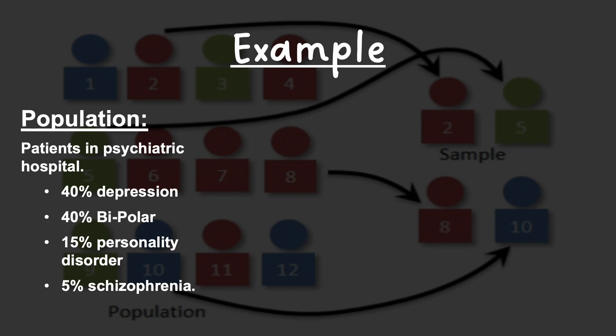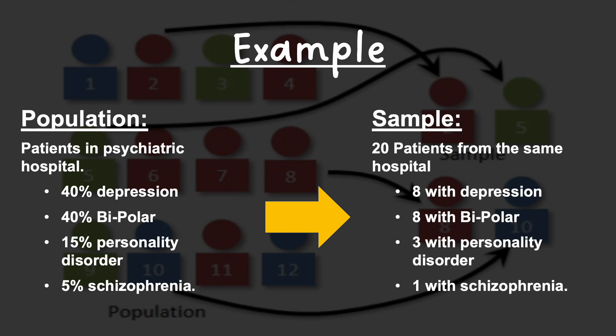For example, if the population is patients in a psychiatric hospital with four subgroups — 40% with depression, 40% with bipolar, 15% with a personality disorder, and 5% with schizophrenia — and you want a sample of 20 people, then proportionally you need eight with depression, eight with bipolar, three with a personality disorder, and one with schizophrenia, because 40% of 20 is 8, 15% of 20 is 3, and 5% of 20 is 1.